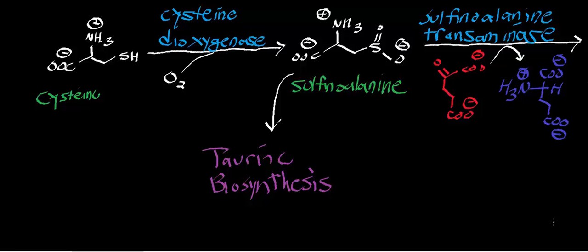And the rate-limiting and committed step in this catabolic pathway is catalyzed by cysteine dioxygenase. So this enzyme effectively removes cysteine from the blood and the cell. And it's going to irreversibly dioxygenate the sulfur atom right here on cysteine.